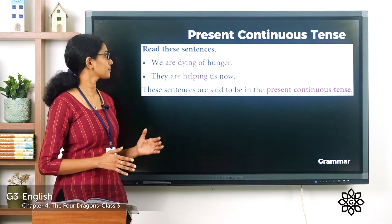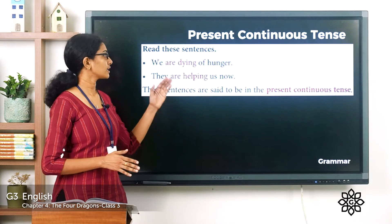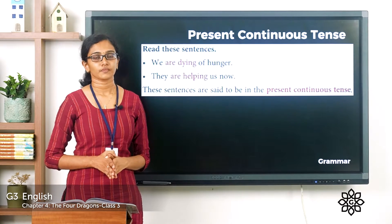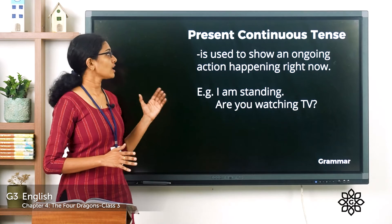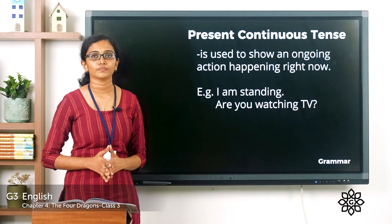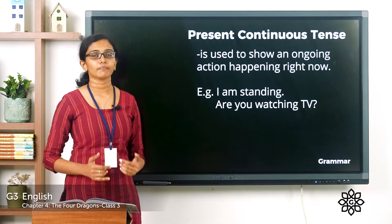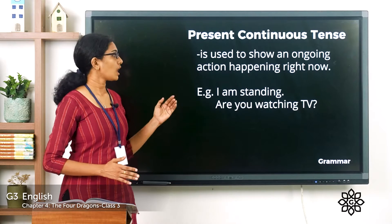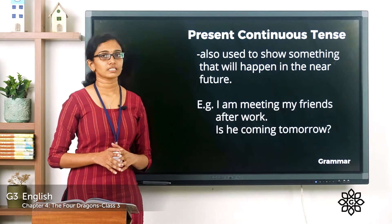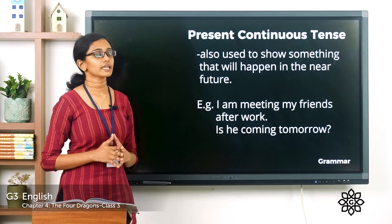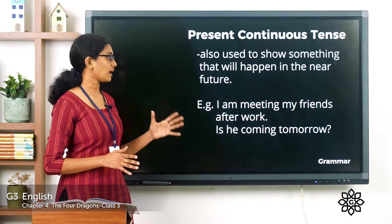The sentences 'We are dying of hunger' and 'They are helping us now' are in the present continuous tense. The present continuous tense is used to show an ongoing action happening right now. For example, 'I am standing' is an ongoing action happening right now. 'Are you watching TV?' The present continuous tense is also used to show something that will happen in the near future, like 'I am meeting my friends after work.'